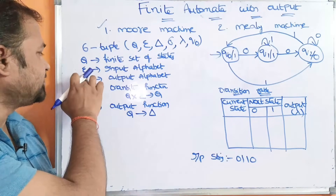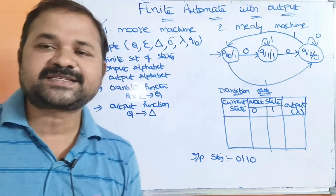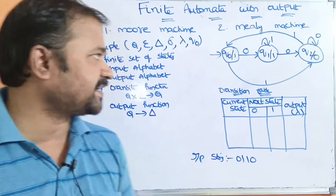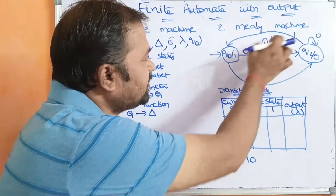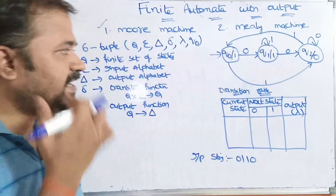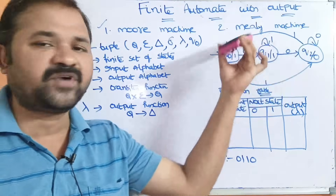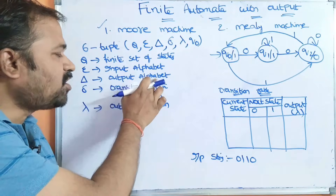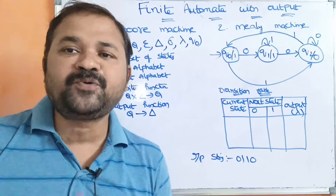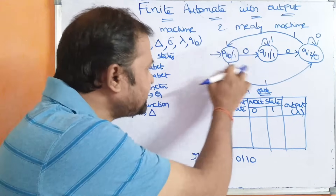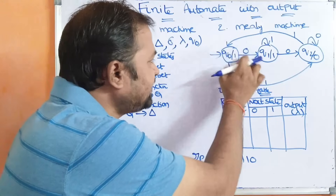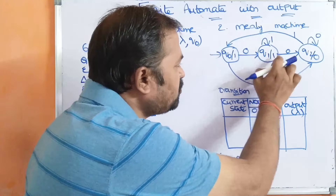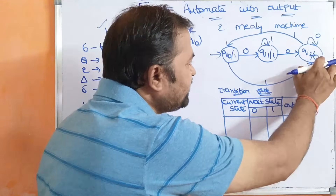Now let us see the next tuple: sigma. Just like DFA and NFA, sigma represents the input alphabet. Here the input alphabet symbols are 0 and 1 — we can apply 0 on the state or we can apply 1 on the state. Next is big delta, which is called the output alphabet. Here, within the circle in Moore machine, we specify the output. The output of Q-naught is 1, output of Q1 is 1, and output of Q2 is 0.